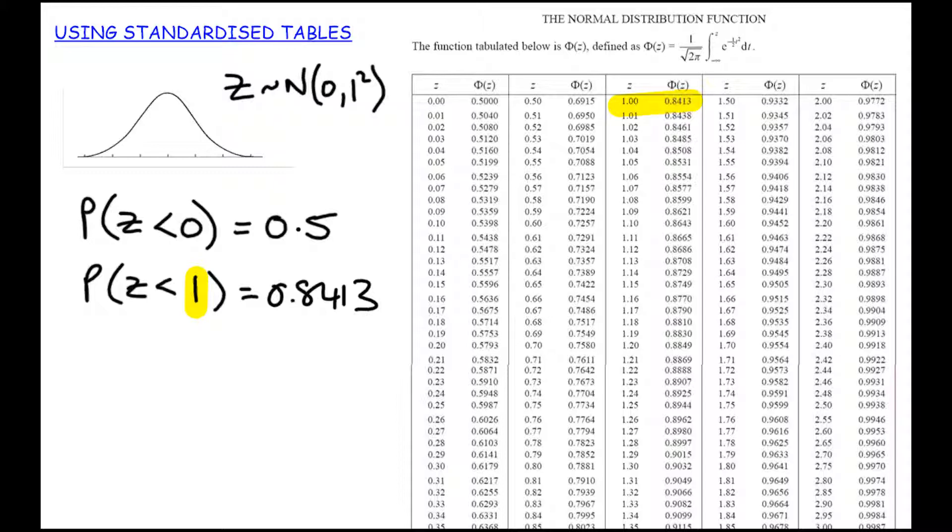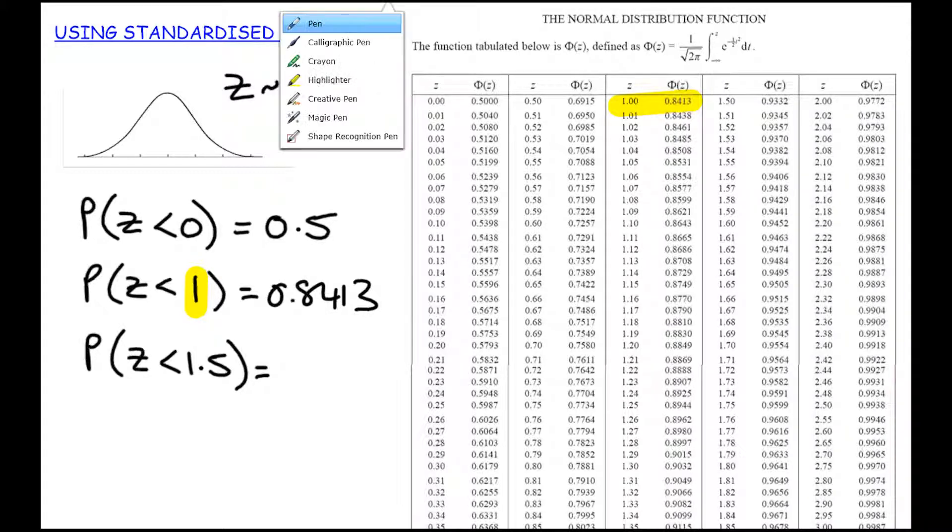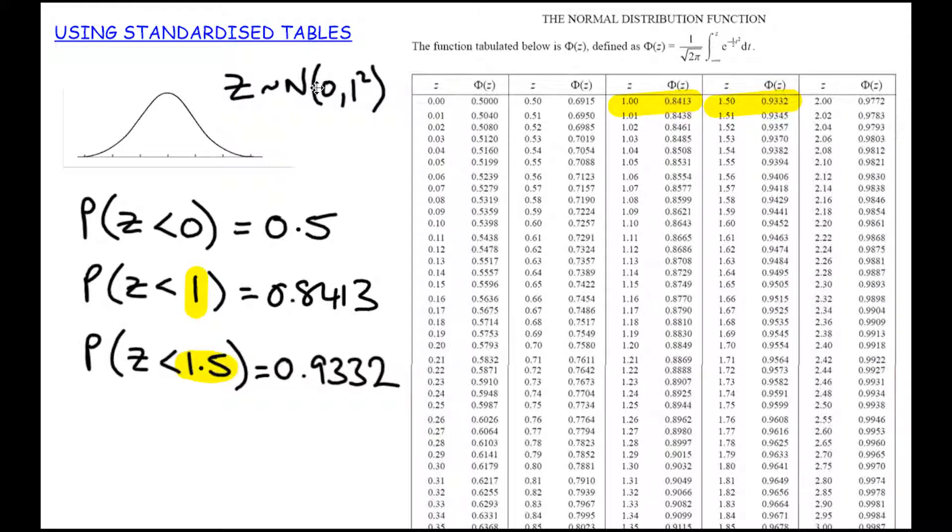And that's just a little bit more accurate than our 68, 95, 99.7 rule. What if it was less than 1.5 standard deviations? Once again, we'll look up this Z score, 1.5 in the tables, and we get 0.9332. So this is how we can make use of the tables to find our probabilities.